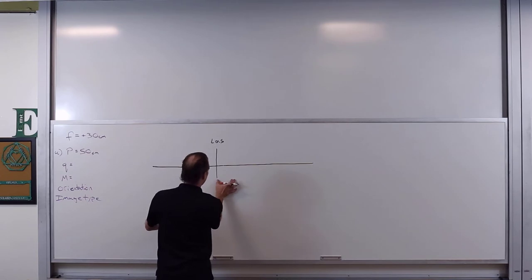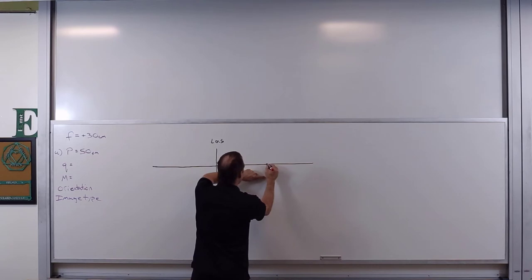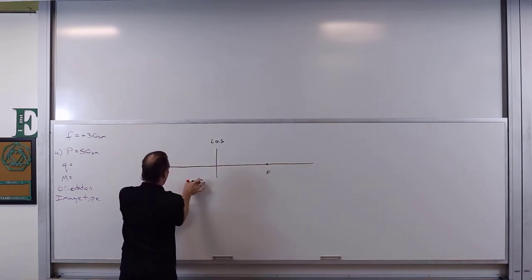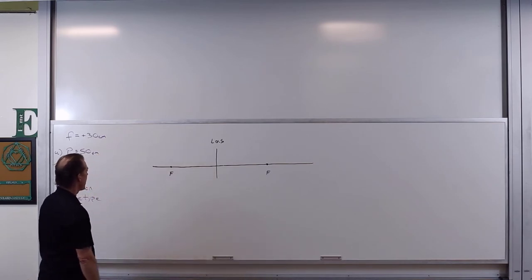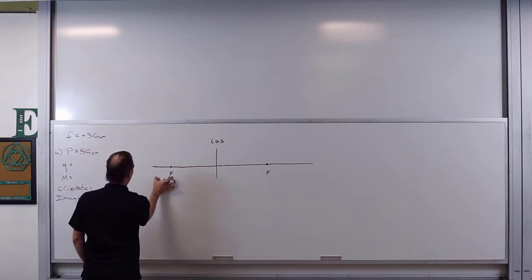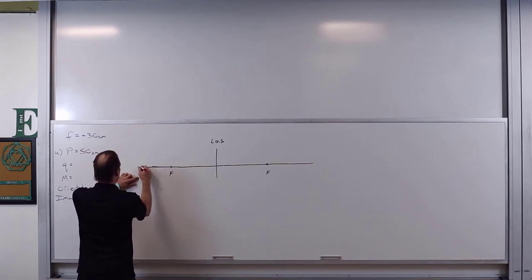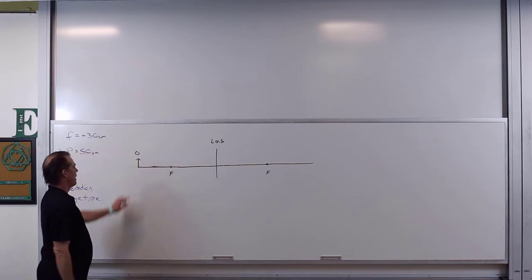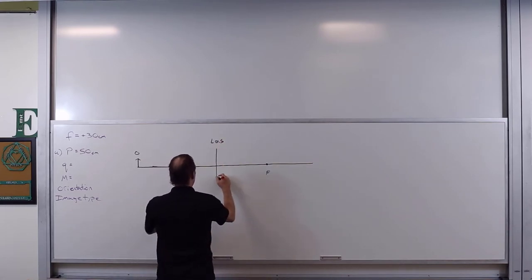10, 20, 30 — we have a focal point here, and 10, 20, 30 — and a focal point here. The lens has two focal points equidistant from the lens on either side. Then we're going 40, 50 — so our object is going to be about right here. There's our object. I'm going to make this lens a little bit longer so we can make sure everything interacts with the lens.